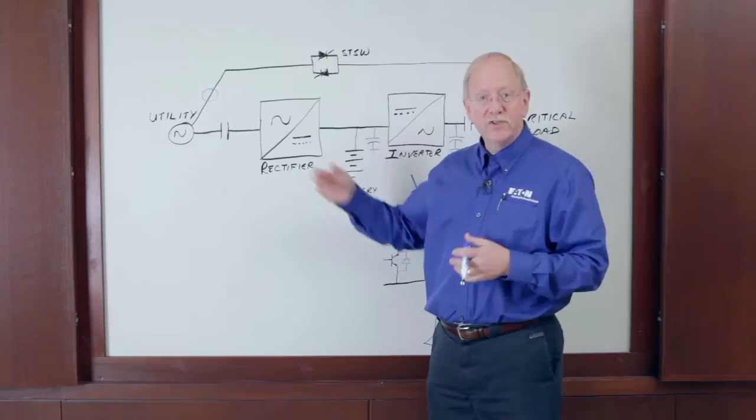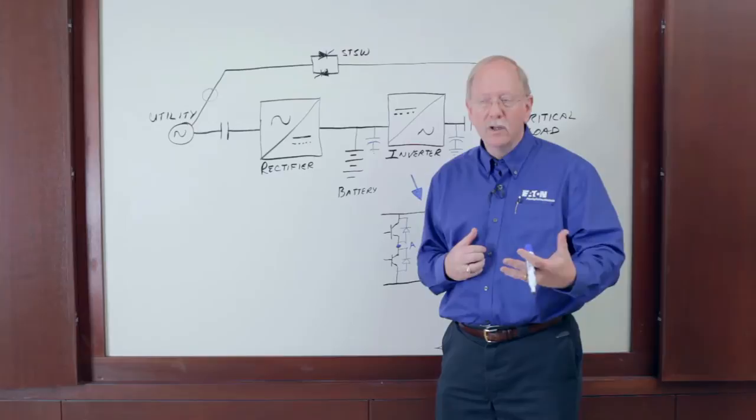So in traditional ECO mode, the plan was to basically turn on the static switch and shut off the UPS. The problem was it takes too long to start a UPS from shutdown mode.